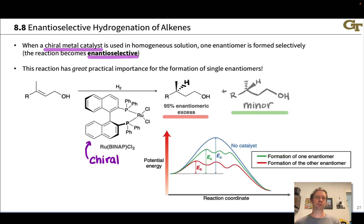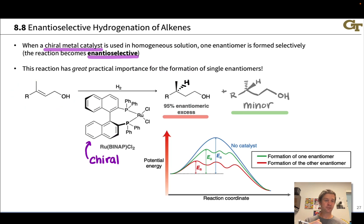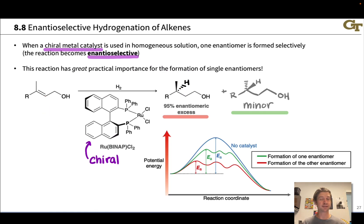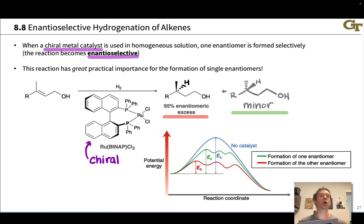Hydrogenation is a very attractive way to establish a stereocenter. Starting with an achiral alkene, a new stereocenter is established in the product. If one could do that selectively to generate a single enantiomer, that is highly attractive — especially since pharmaceuticals nowadays are almost always prepared as single enantiomers, because the opposite enantiomer can have toxic effects on the chiral molecules within the body.